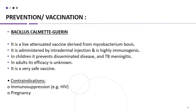BCG vaccine is used for prevention of tuberculosis. It is a live attenuated vaccine derived from Mycobacterium bovis, administered by intradermal injection and highly immunogenic. In children it prevents disseminated disease and TB meningitis; in adults its efficacy is unknown, but it is a very safe vaccine. Contraindications: because it is a live attenuated vaccine, all immunosuppressed individuals and pregnant women should avoid it.